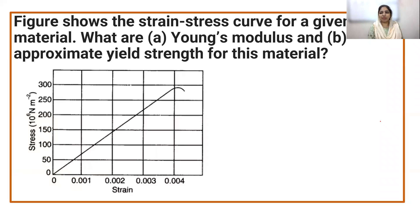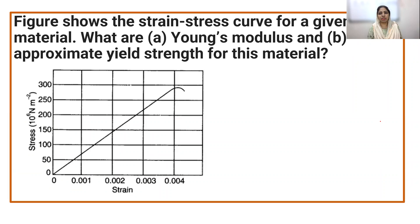In the second exercise, we have a graph. The figure shows the stress-strain curve for a given material. We are looking at the approximate values of Young's modulus from the stress-strain curve. We also look at how to identify the yield strength and Young's modulus graphically.